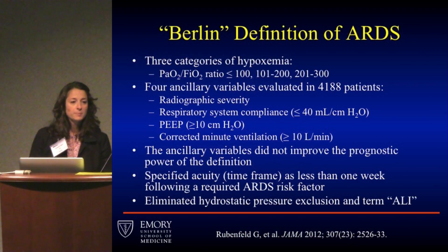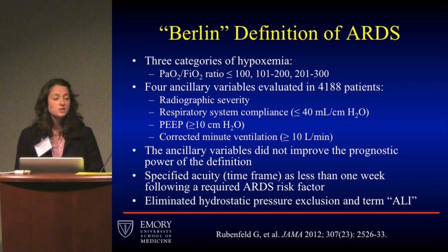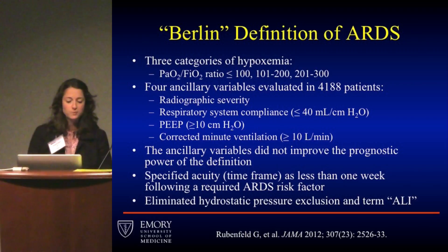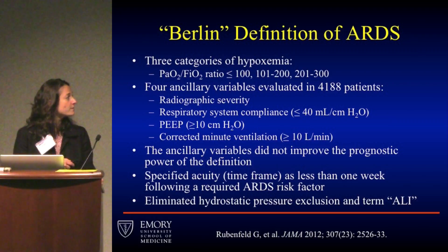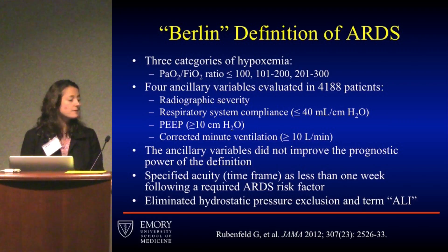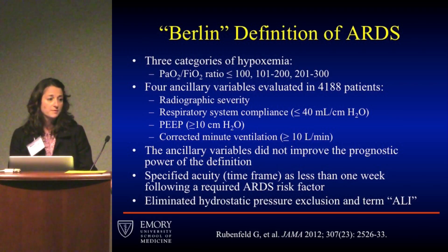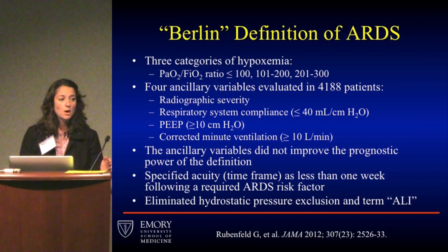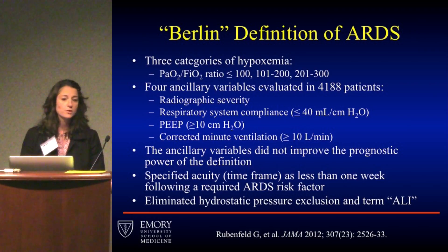The European Society of Intensive Care Medicine put together a consensus conference to improve the definition. They included three categories of hypoxemia and four ancillary variables — radiographic severity, respiratory system compliance, PEEP, and corrected minute ventilation — tested in about 4,000 patients. These ancillary variables did not add to the prognostic power and were left out of the final definition. In the Berlin definition, they specified acuity: ARDS had to develop within one week of an insult. Finally, they eliminated hydrostatic pressure criteria and the term ALI.